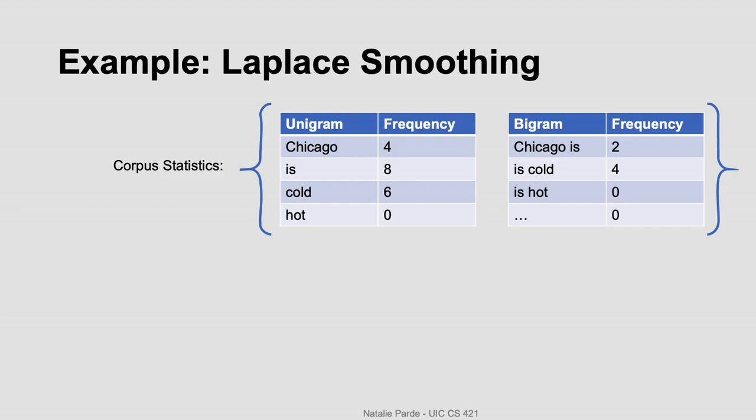We can work through an example to see how Laplace smoothing works. Let's say we have the toy data site here where we have unigram and bigram counts for items in our forward vocabulary. We're only showing some of the possible bigrams within this vocabulary, but we'll just pretend for the sake of simplification that all of them that aren't shown have counts of zero. We can check out our corpus statistics and we see, for example, that the word is is really frequent and the word hot never exists.